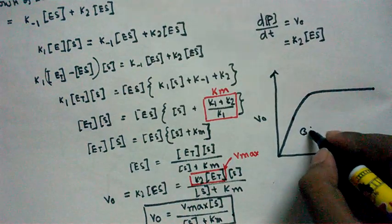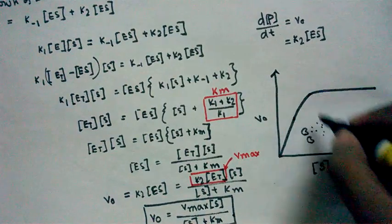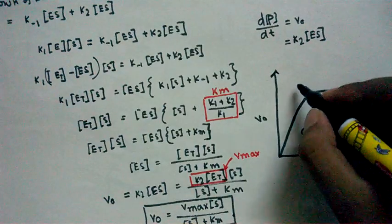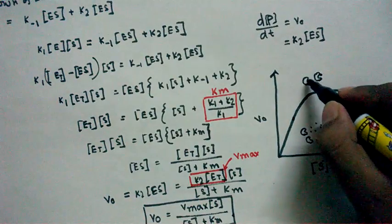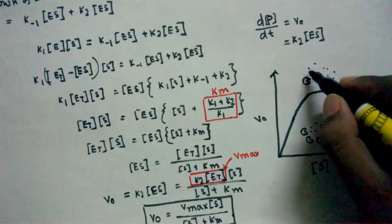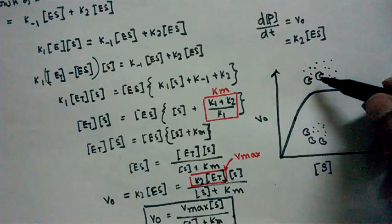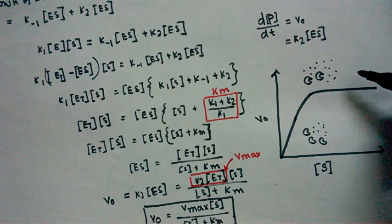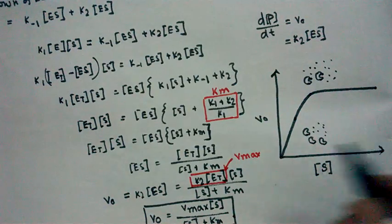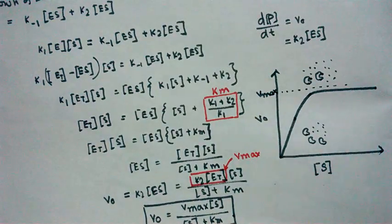At low substrate, enzymes are not saturated. At intermediate substrate, enzymes and substrate are balanced. At high substrate concentration, all enzyme active sites are fully saturated and there is extra substrate present. No matter how much more substrate is added, the velocity of the enzyme reaction no longer increases. At this point, the enzyme has reached its maximum velocity, Vmax.